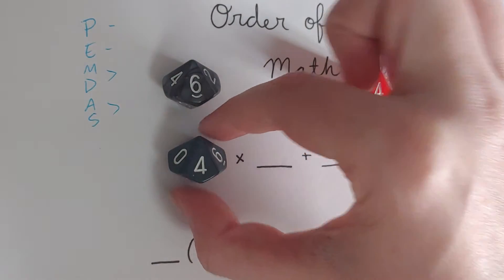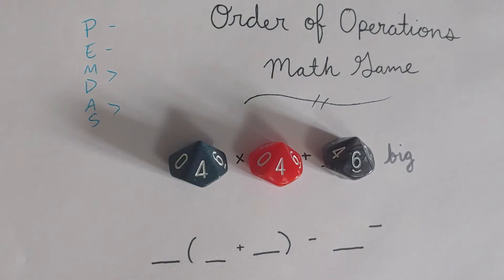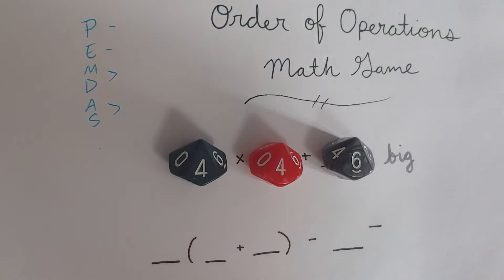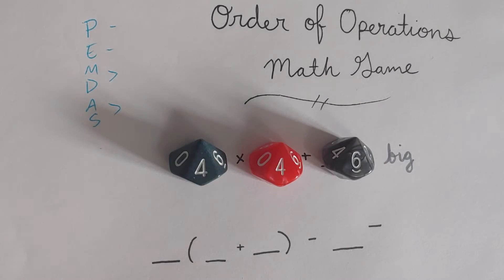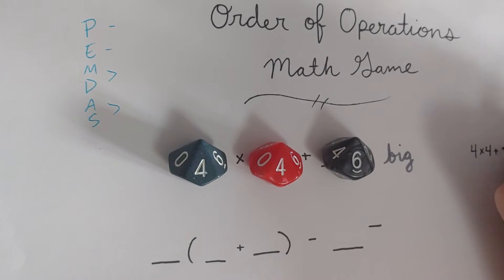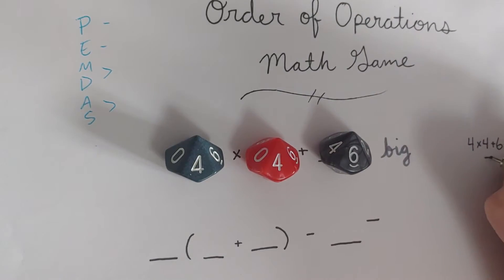Let's see — if I put this four here and this four here and this six here, then according to the order of operations I would do the multiplication first. So four times four is sixteen, plus six more would equal twenty-two. So we could say four times four plus six equals twenty-two.